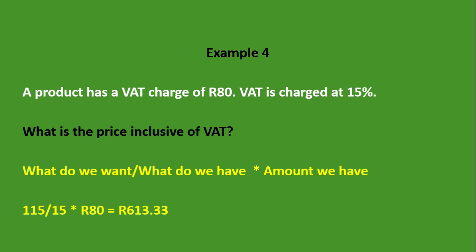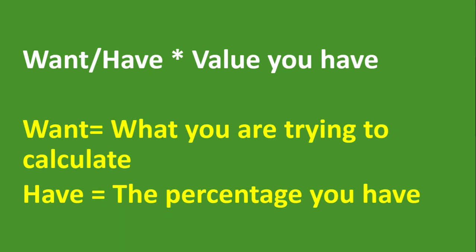That is how you use this simple formula to get any percentage or any value that you want. You just need to understand where to plug in what, and you'll be able to use it. Remember the formula: what you want is the numerator, divided by what you have as the denominator, times the value that you have. 'Want' is what we are trying to calculate, and 'have' is the percentage we have, which always relates to the value we have. Hope that has helped — please consider subscribing, liking, and sharing the video.